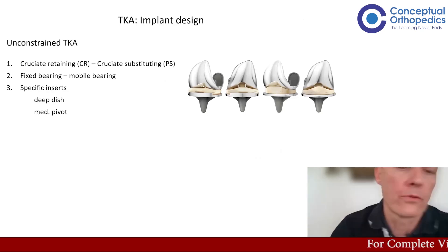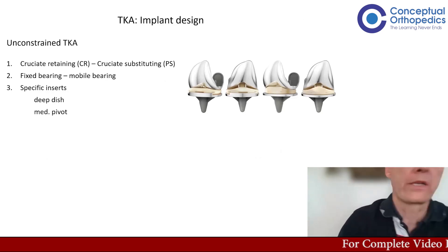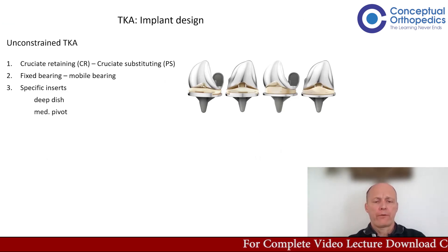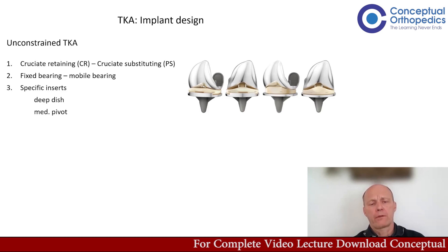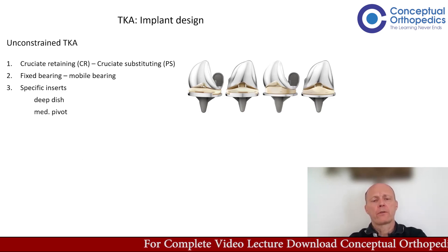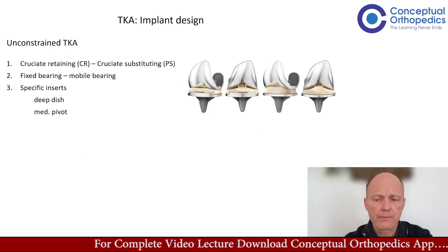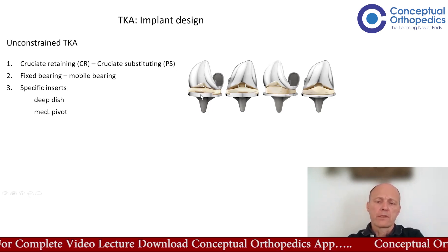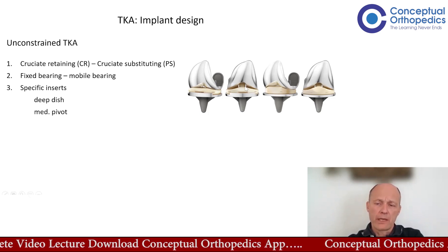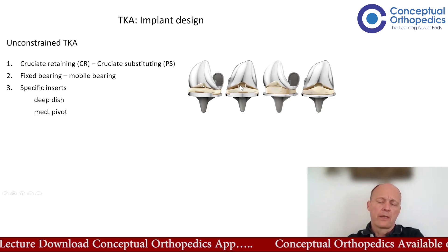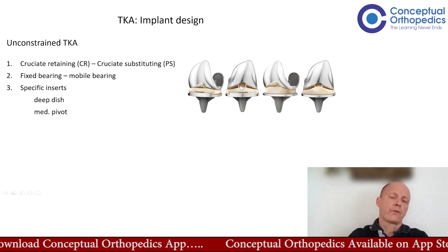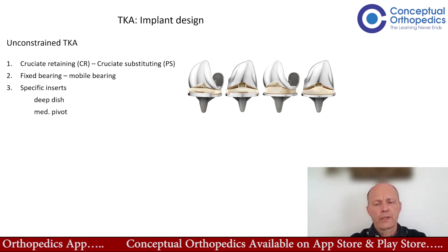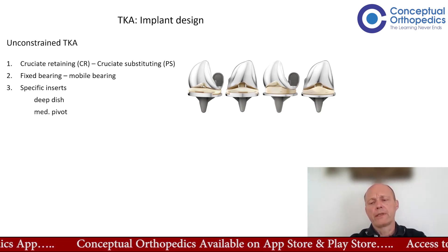When we go back to unconstrained knees, we have the differentiation between CR and PS. This is what you see here — the CR knee, and in the PS knee you see this peg going into the box. But you also have the differentiation between fixed bearing and mobile bearing knees.